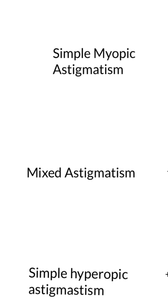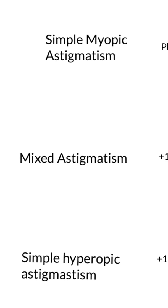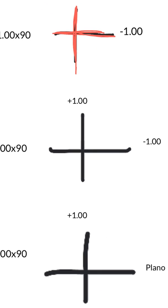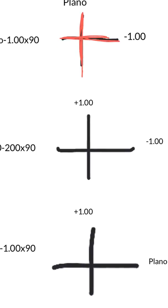Next is called mixed astigmatism. Here's an example eyeglass prescription and its optical cross. You can see that the vertical meridian is positive and the horizontal meridian is minus — so it's a mix of hyperopia (positive) and myopia (minus).